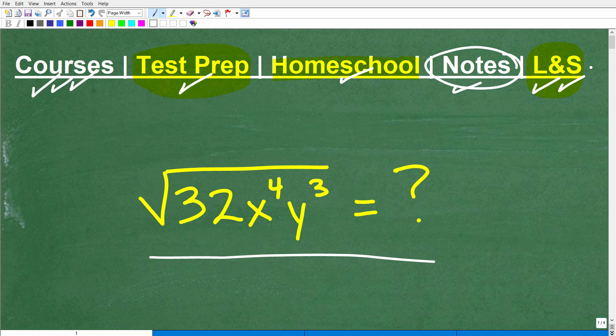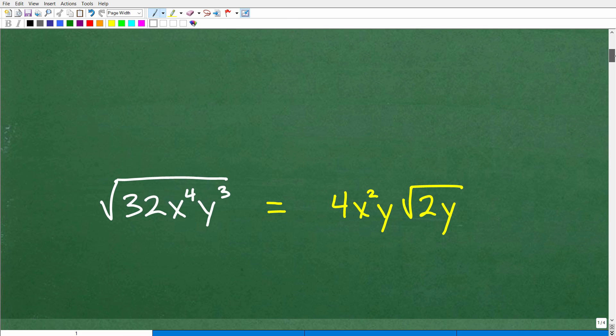Okay, so I'm going to show you the answer here in just one second. If you don't want to see it, just pause the video. But I'm going to show you the answer right now. Okay, so this is the correct answer. So the square root of 32 times x to the 4th times y cubed is equal to 4x squared y times the square root of 2y.